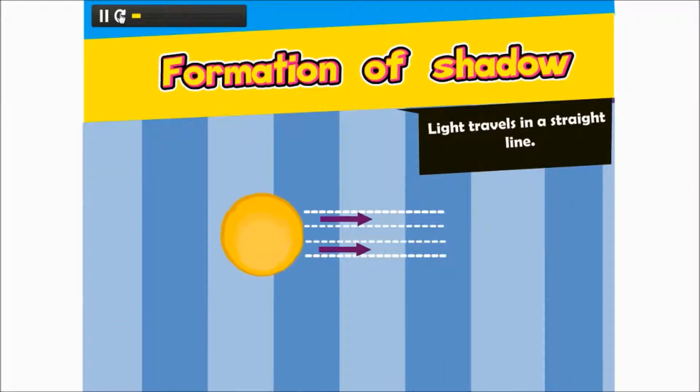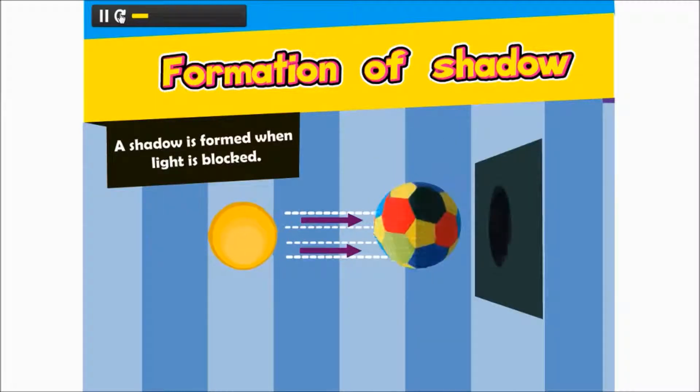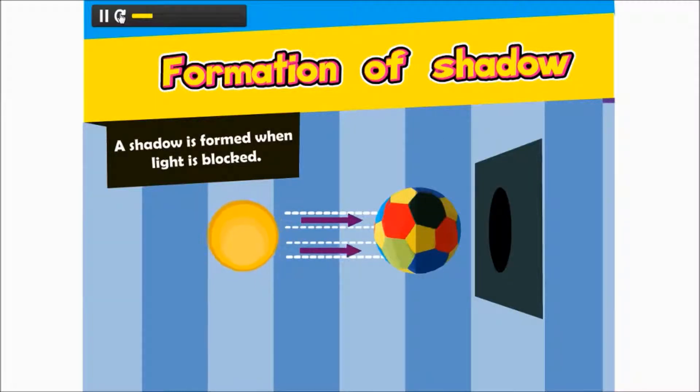Formation of Shadow. Light travels in a straight line. A shadow is formed when light is blocked.